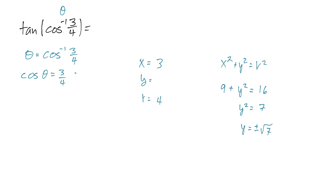Now, in quadrants 1 or 2, y is positive. So we know it is actually the positive square root of 7, so we know y is the square root of 7. Now, we want to know what tangent of theta is. Well, tangent of theta is always y over x. So tangent of cosine inverse of 3 fourths has got to be the square root of 7 divided by 3.